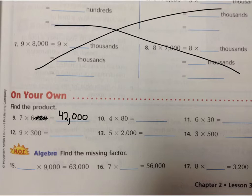Number 10 says 4 times 80. We scratch out one zero. 4 times 8 is 32. We put one zero onto the end, 320. Number 11 says 6 times 30, so we scratch out a zero. Do 6 times 3, which is 18. Put a zero onto the end, 180.